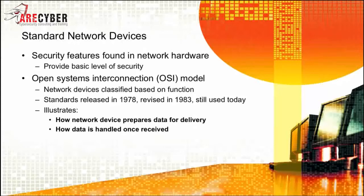To understand how the different network devices and hardware provide security, you need to start at the beginning. It all starts with the OSI model, or the Open Systems Interconnection model. This is how network devices are classified based on their functions. It illustrates how a network device prepares data for delivery and how data is handled once it's received.